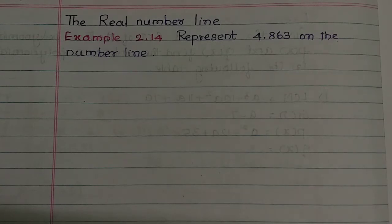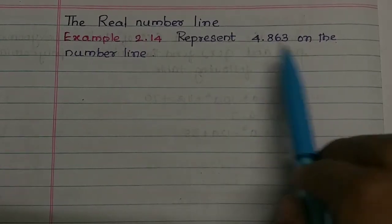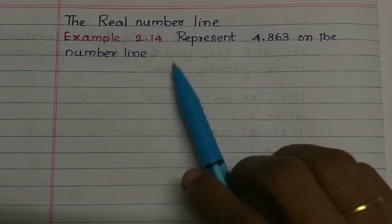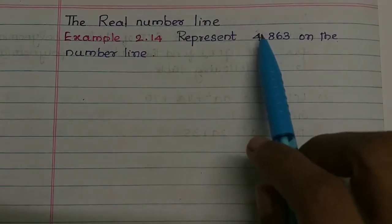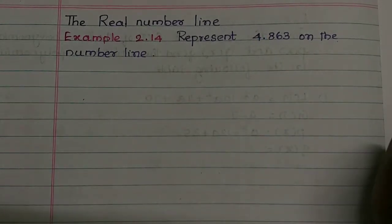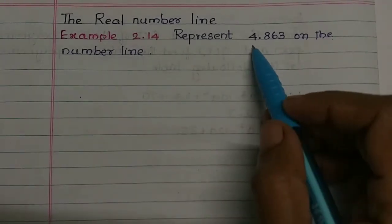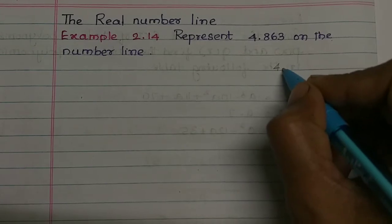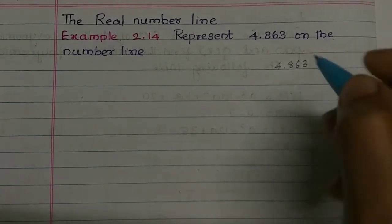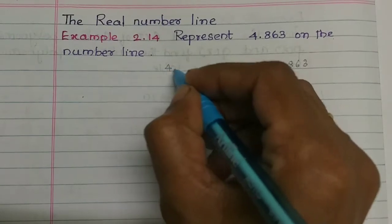Here is example 2.14. Let's look at example 2.14: Represent 4.863 on the number line. The number we need to locate is 4.863. If you look directly at the number line, you can tell where it is. But we can also judge carefully how to place it precisely.